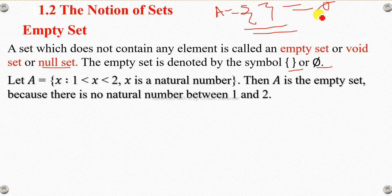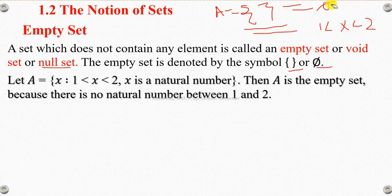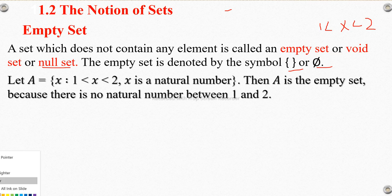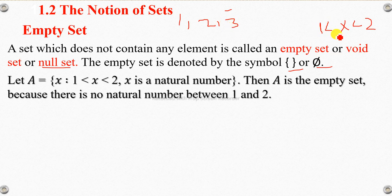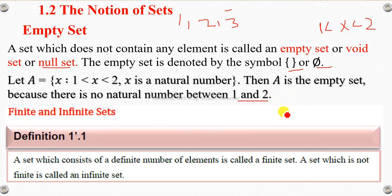In this example, let A be the set where A is equal to {x : 1 < x < 2, x is a natural number}. So we understand x is equal to values less than 2. Since x is a natural number, there is no natural number between 1 and 2, so this set is an empty set.